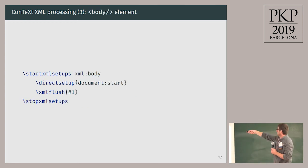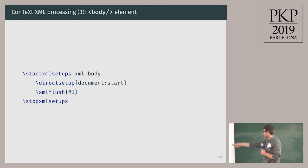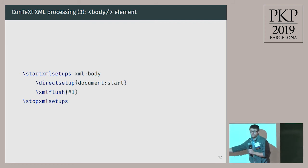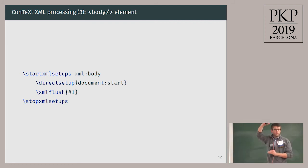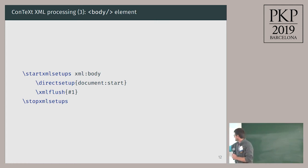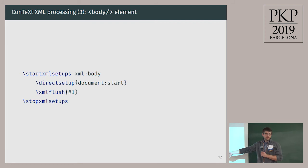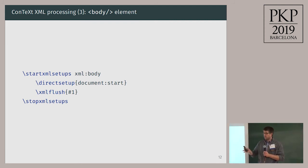Let's start with the body element. We have a setup, xml:body. The main thing is we just flush it through — the whole element — and pass it to ConTeXt to handle it. But before that, we have an additional macro to handle the front matter: title, author, title page, ISSN number, whatever you want — you can just pass it through here.